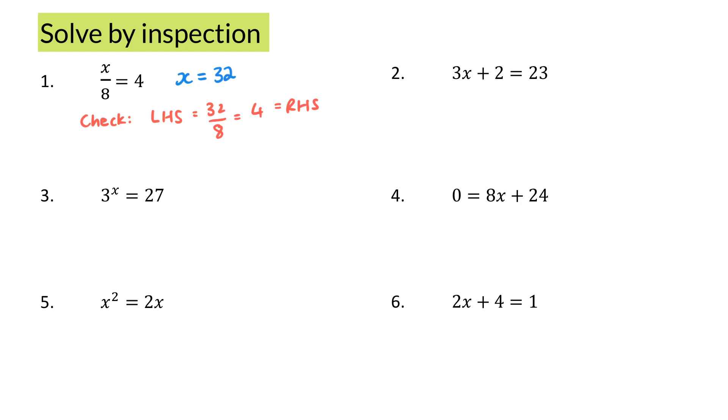3x plus 2 is 23. Now surely, 3x is going to have to equal to 21, because 21 plus 2 is 23. And 3 times by what is 21? 3 times by 7. So x must be 7. I can check my answer if I want. Left-hand side: 3 times 7 plus 2. 21 plus 2 is 23, which is my right-hand side.